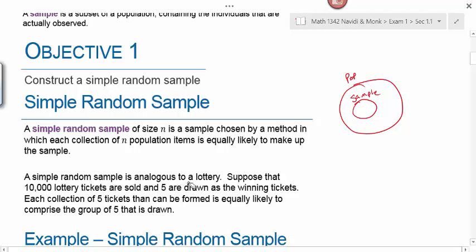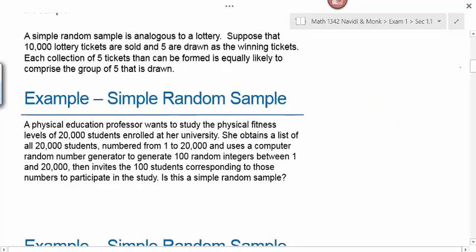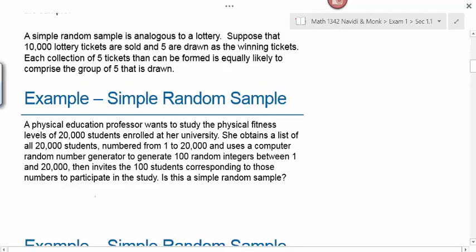A simple random sample is analogous to a lottery. Suppose 10,000 lottery tickets are sold and five are drawn as winning tickets — each collection of five tickets is equally likely to be drawn. Here's an example: a physical education professor wants to study fitness levels of 20,000 students. She numbers them 1 to 20,000, uses a computer random number generator to produce 100 random integers, then invites those 100 students to participate. Is this a simple random sample? Yes, because every student had the same chance of being selected.